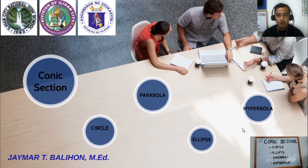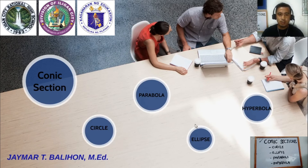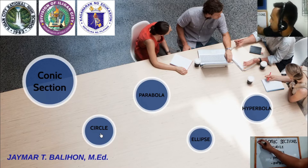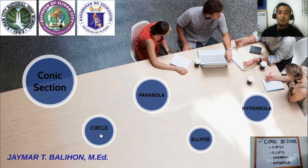So, there are four subtopics under conic sections: we have circle, parabola, ellipse, and hyperbola. Now we are done with the introduction to conic sections. Let's proceed to circle.